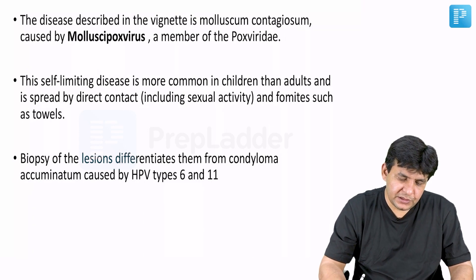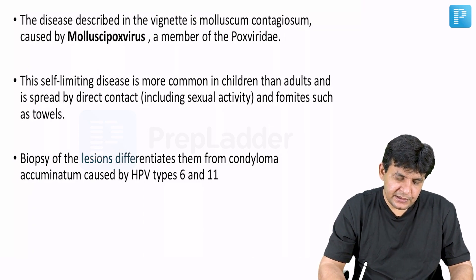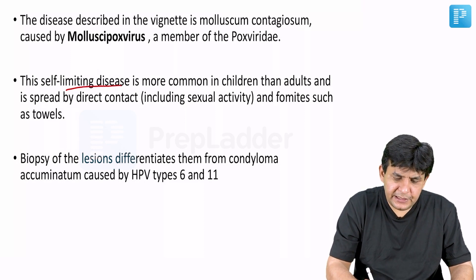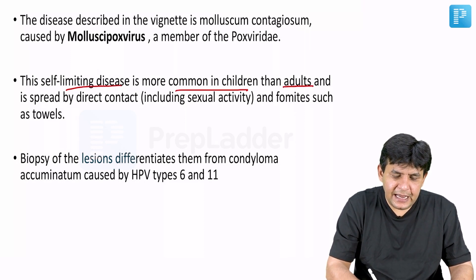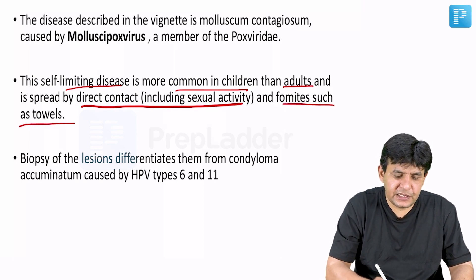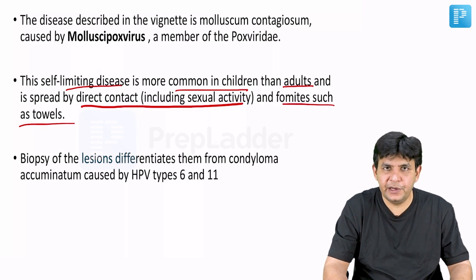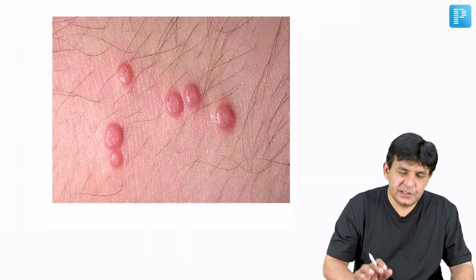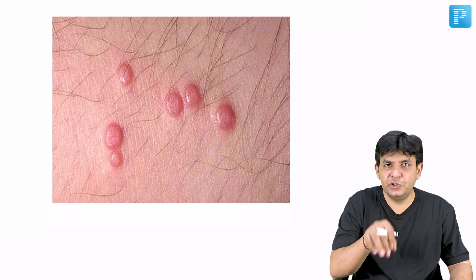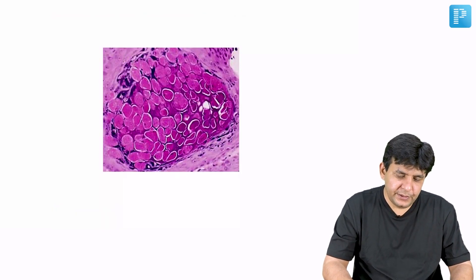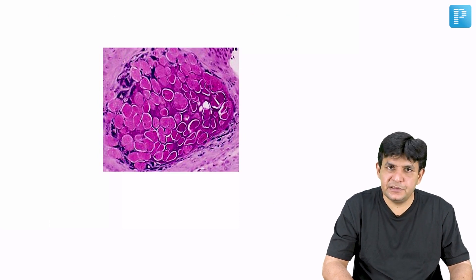This is a self-limiting disease, mostly in children and also in adults. It can spread through sexual activity or through fomites such as towels. Sexual transmission is also observed. They can show you a picture of molluscum contagiosum in the exam — this is what molluscum bodies, or Henderson-Peterson bodies, look like.